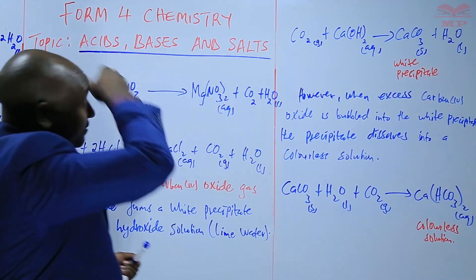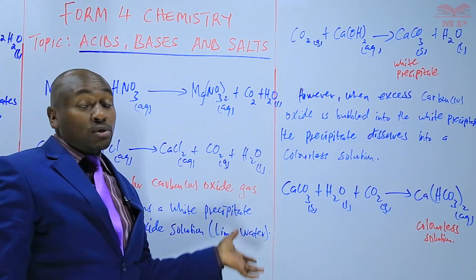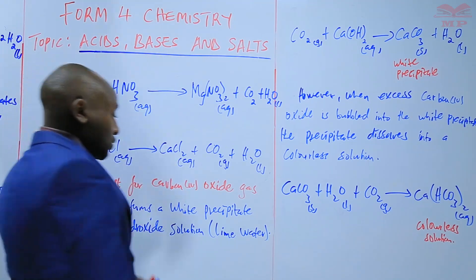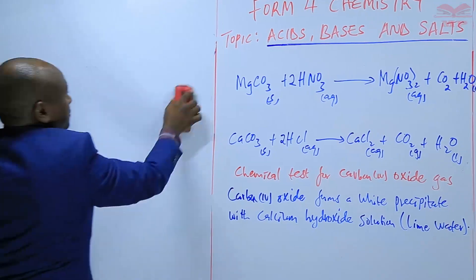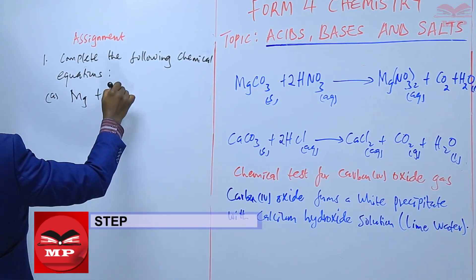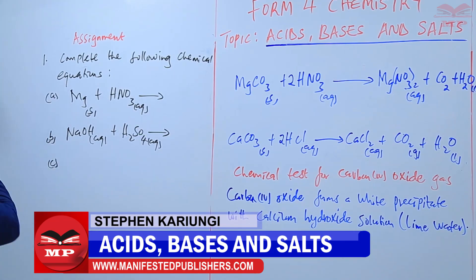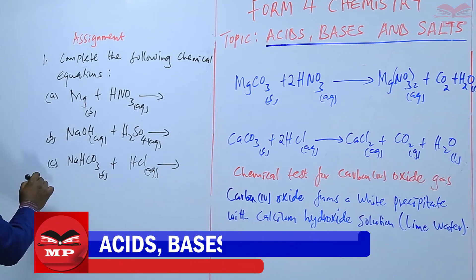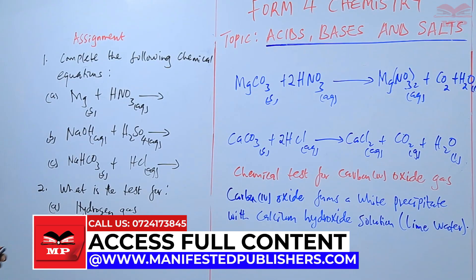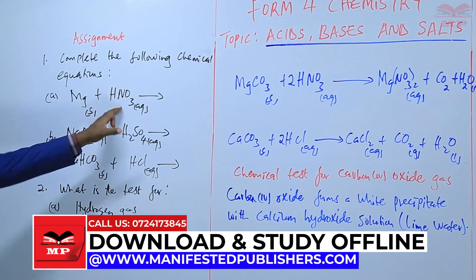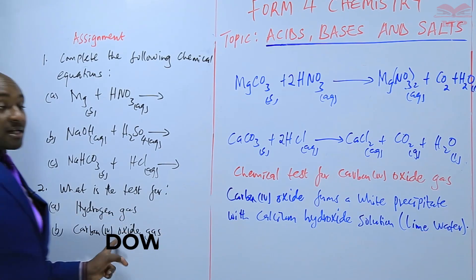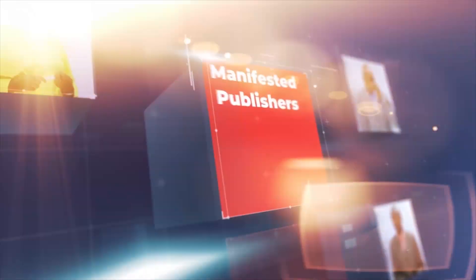We have now seen the three properties of acids: as they react with metals, as they react with bases, and as they react with metal carbonates and hydrogen carbonates. The assignment has two questions: first, complete the following chemical equations as indicated; second, what is the test for hydrogen gas and carbon dioxide gas? We will stop there until next time. Goodbye.